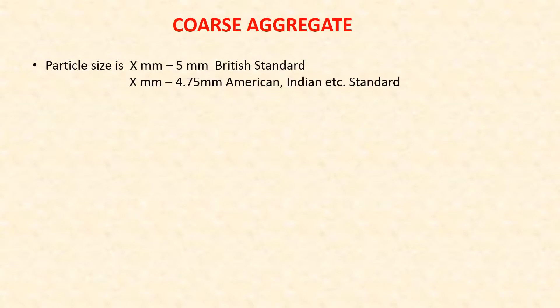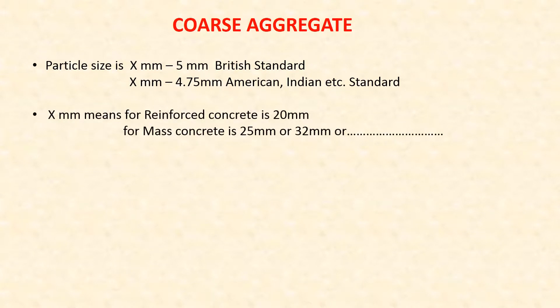Coarse aggregate particle size ranges from X mm to 5 mm in British standard, and from X mm to 4.75 mm in American or Indian standard. For reinforced concrete, X is equal to 20 mm — so the coarse aggregate size range is 5 to 20 mm. For mass concrete, X can be 25, 32, 40 mm or more.